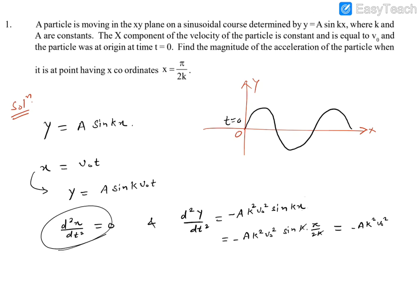Now X component of acceleration is 0, Y component, resultant acceleration magnitude we can say. Resultant acceleration is basically √(ax² + ay²). ax is 0, ay is this much, so that will turn out to be A into K into V0, and these two are squared.